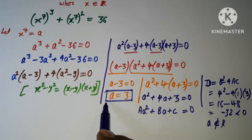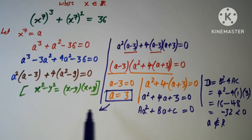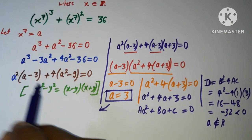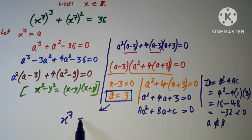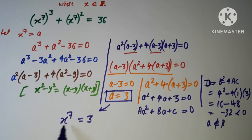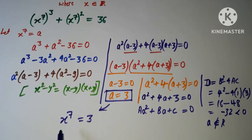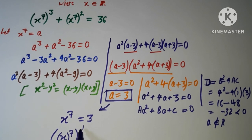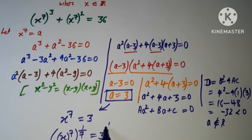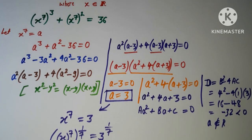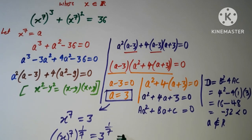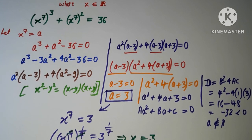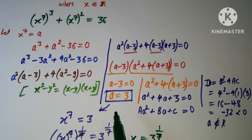Since we defined a = x to the power 7, we have x⁷ = 3. Raising both sides to the power 1/7, we get x = 3 to the power 1 upon 7. This is our solution.